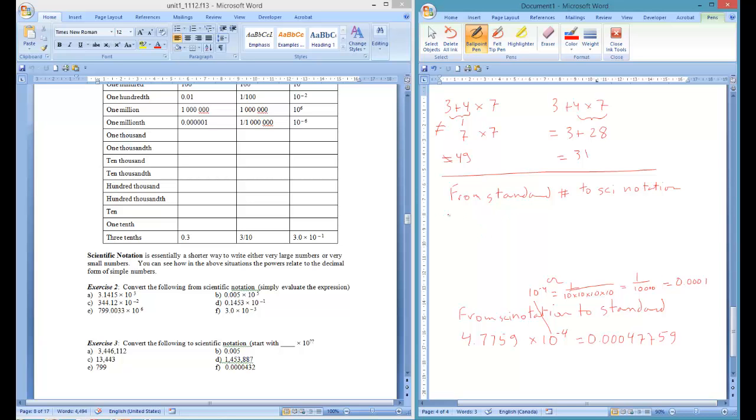Now, from standard number to scientific notation is a little more tricky, but let's take the same number, 0.00047759. And what I'm going to do is I'm going to say, well, you're going to have some number here that we're going to fit in, and it's going to be times ten to the something up here. Now, this is the only thing you really have to memorize is that you go with the first non-zero number. That's a 0, 0, 0. The first non-zero number is a 4. You put a decimal after. And then you write all the rest of the numbers, 7, 7, 5, 9, times ten to the something.